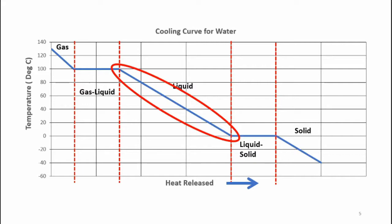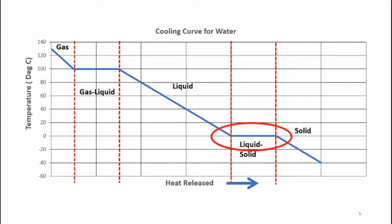Once the temperature of the liquid gets down to the freezing point — 0 degrees C — the temperature remains constant. This point, known as freezing, is when the liquid starts to become a solid. This process takes a little bit of time as well, and the temperature stays constant.